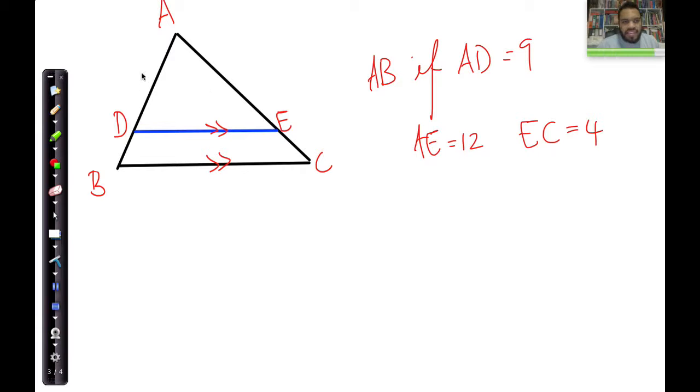That means AD is 9, AE is 12, and EC is 4 units. Now, that means you want this here, you want this over here. Let's just call that X for now. You want DB.